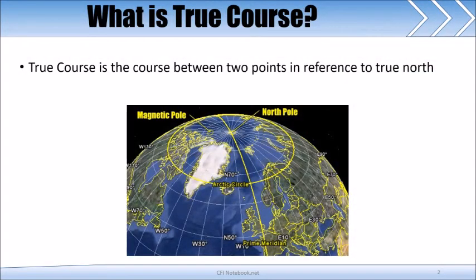So what is true course? True course is the course between two points in reference to true north. True north is depicted here and appropriately labeled the north pole. So in effect, true course is the course in relation to the north pole.